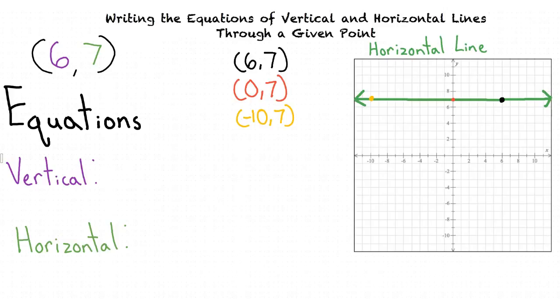What do each of these points share in common? They all have a y-value of 7. Great job! We can see that all the points on this horizontal line have the y-value of 7 since they are all up 7 units from the x-axis. So it makes sense for this line to have the equation y equals 7.